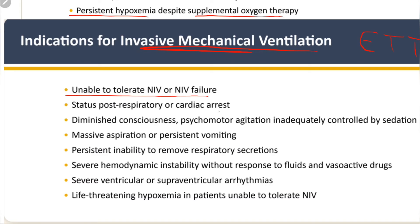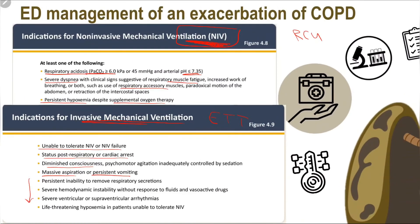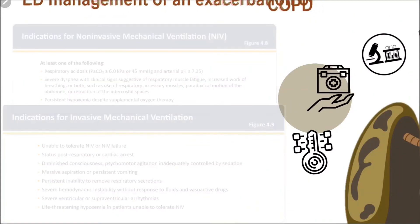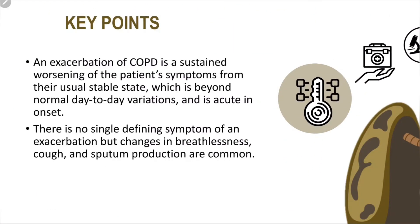If the patient is not responding to non-invasive ventilation, invasive mechanical ventilation such as endotracheal intubation may be required. Intubation is indicated if the patient cannot tolerate NIV, has cardiac arrest or post-cardiac arrest state, diminished consciousness and cannot control their airway, massive aspiration, persistent vomiting, arrhythmia, or life-threatening hypoxemia. However, intubation in these patients is very difficult, and weaning from the endotracheal tube is also very difficult.